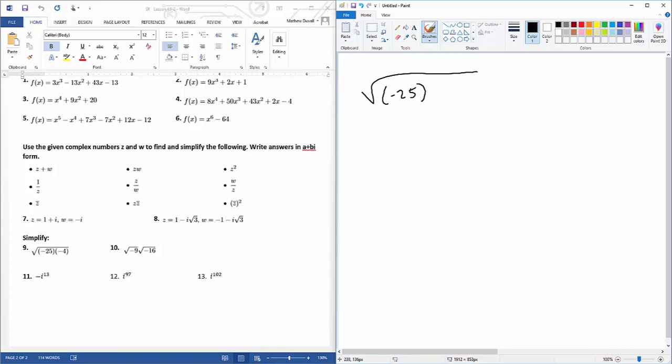Square root of negative 25 times negative 4. So we have to multiply those together, you get the square root of 100, which is 10.